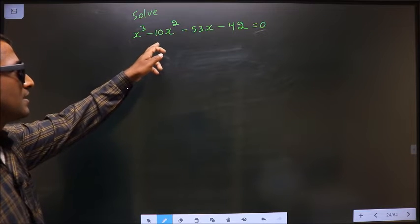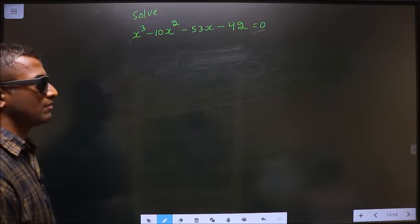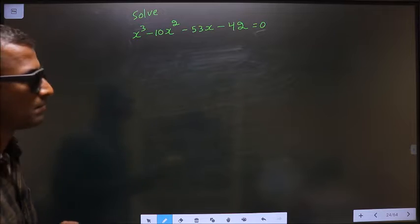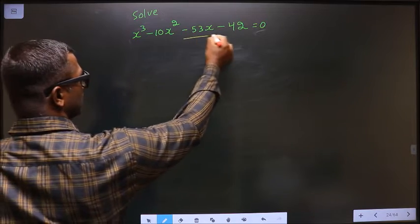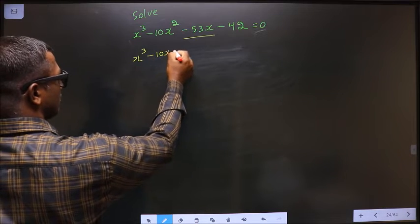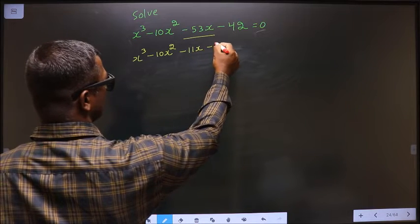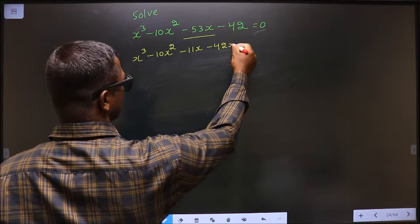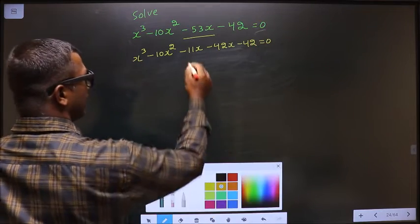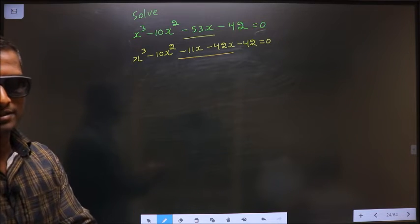Solve x cubed minus 10x squared minus 53x minus 42 equal to 0. To solve this, we have to change the x term, that is minus 53x. In place of minus 53x, I write minus 11x minus 42x.